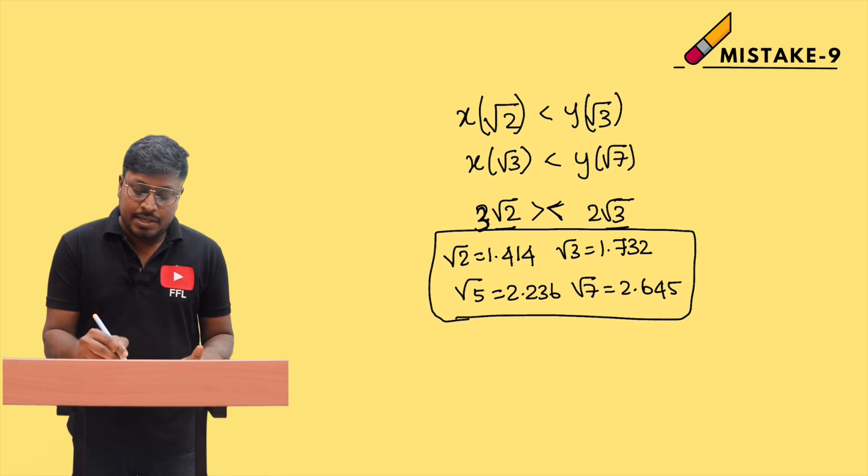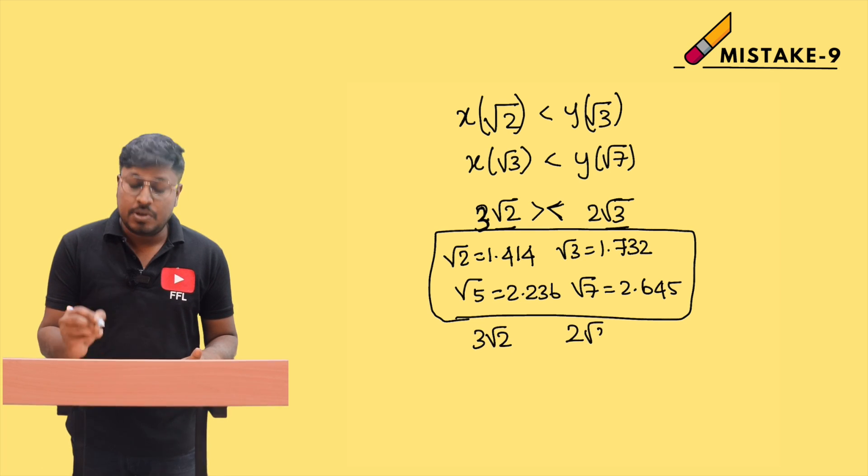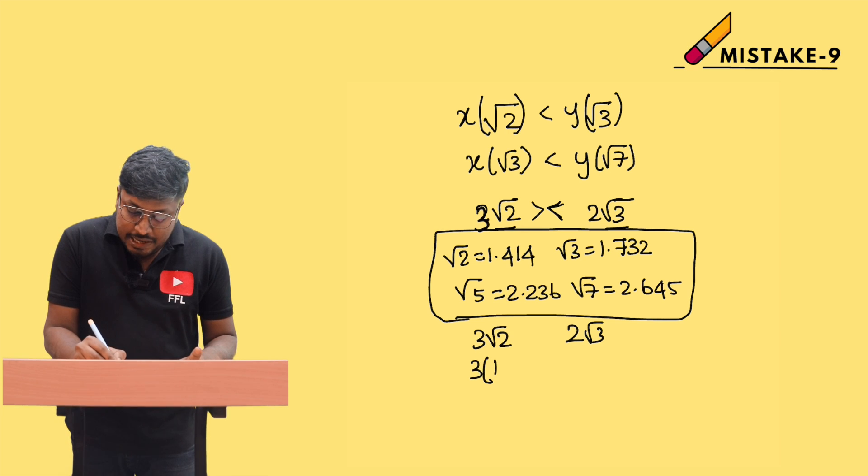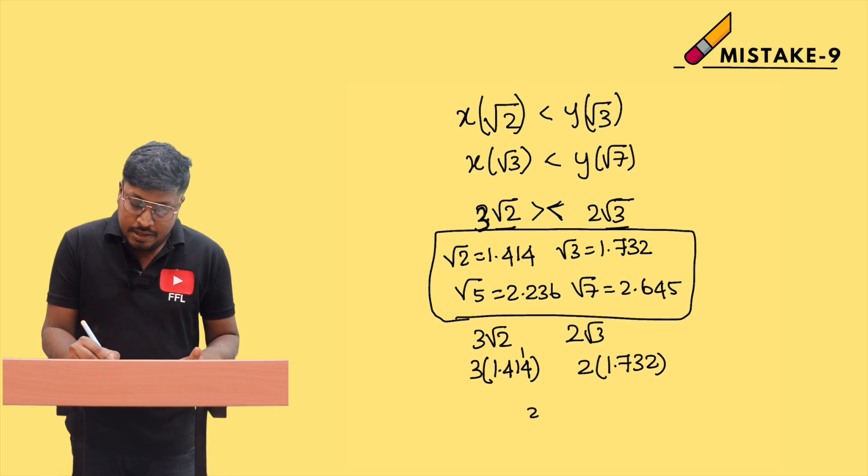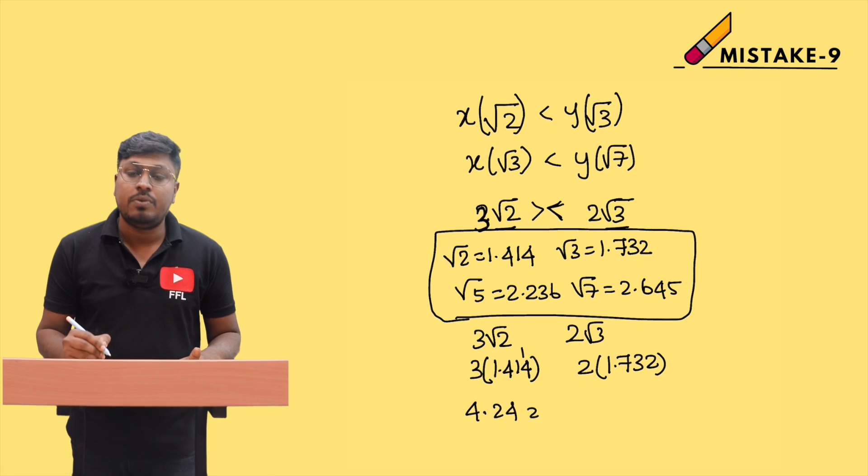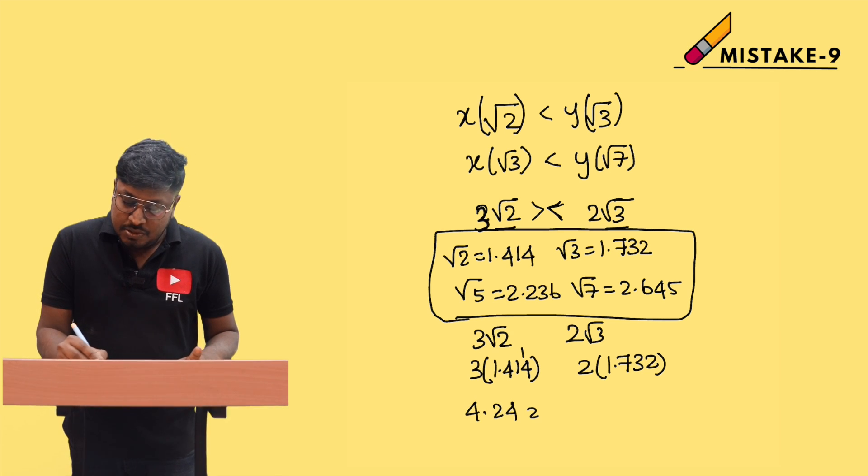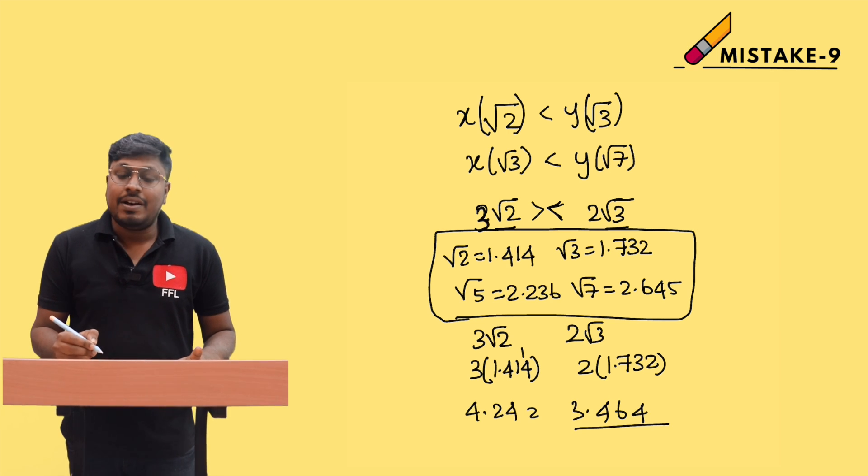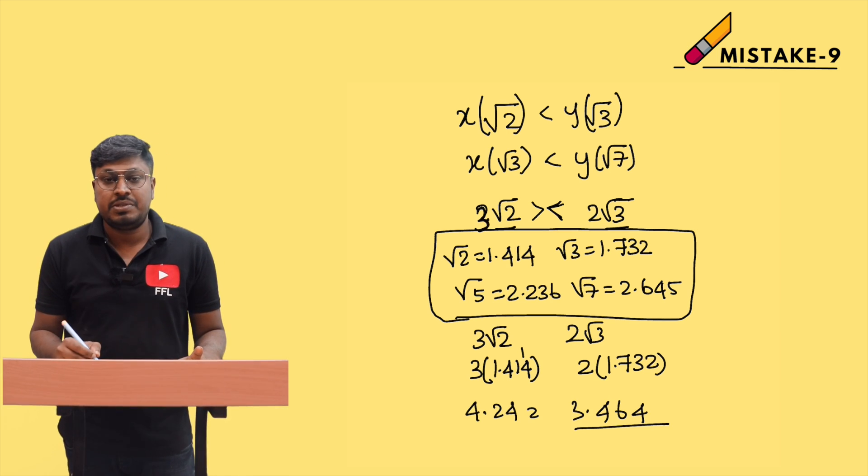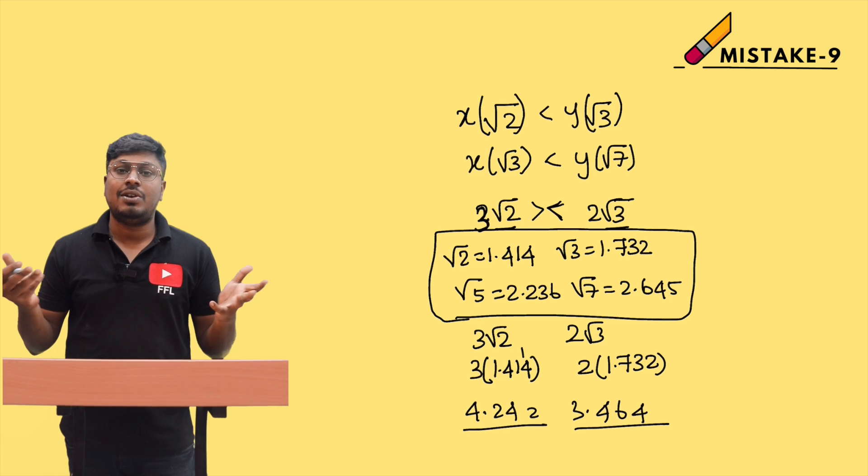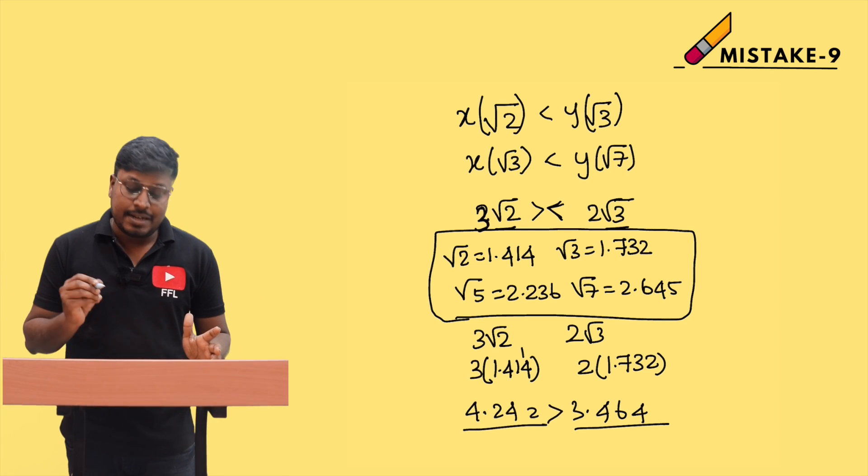When you see 3√2 and 2√3, what you need to do is: 3 times √2 value 1.414 equals 4.242, and 2 times √3 value 1.732 equals 3.464. So x value is 4.242, y value is 3.464. Now which is greater? X is greater.